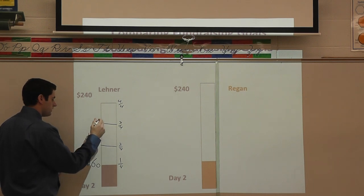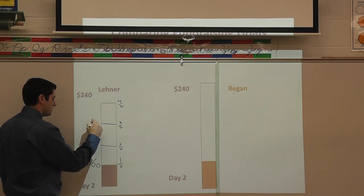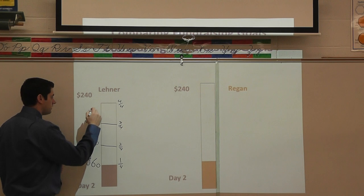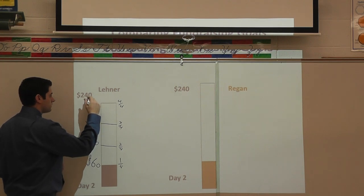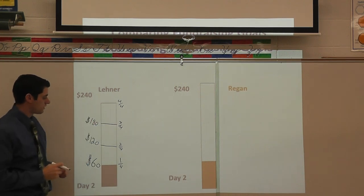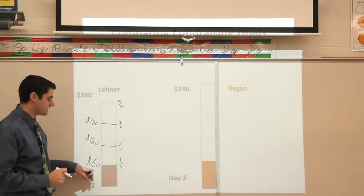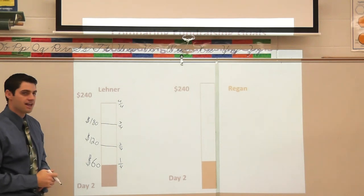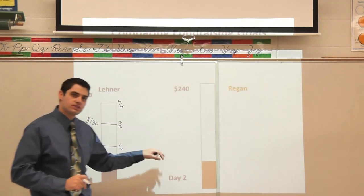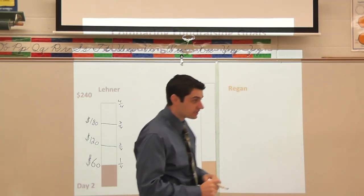Two-fourths would be 120, three-fourths would be 180, and four-fourths would be 240. So far, Mr. Lehner's class has raised sixty dollars. Let's take a look at Mrs. Regan's class.